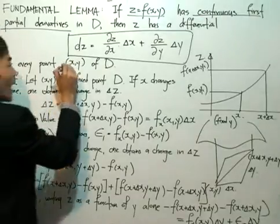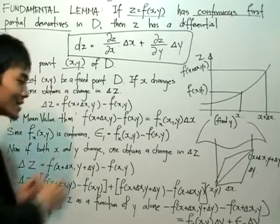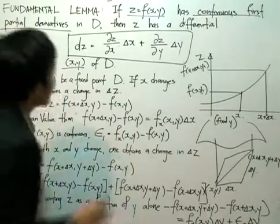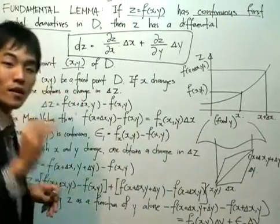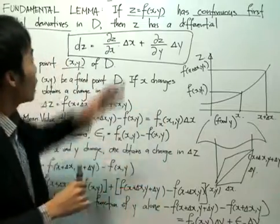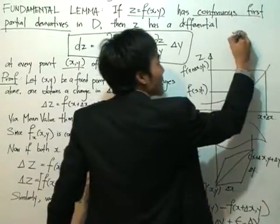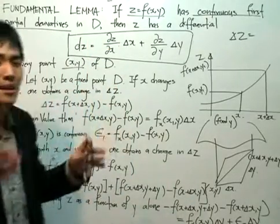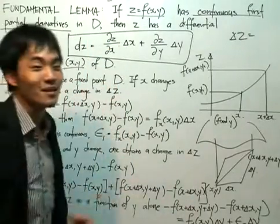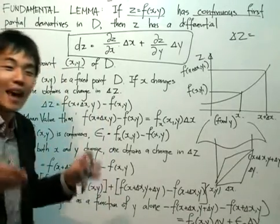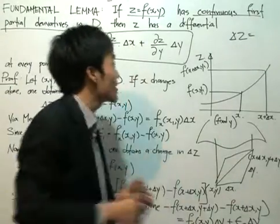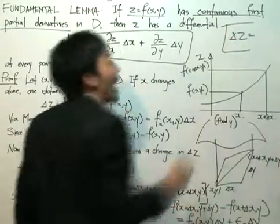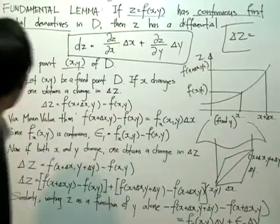At every point x and y of D, this is what we want to prove. Here's a rough plan: we simply first need to show that this function has a total differential. To get the total differential, the function delta z needs to take a certain form — it takes the form of a*delta_x + b*delta_y + epsilon_1*delta_x + epsilon_2*delta_y, where epsilon_1 equals 0 as (delta x, delta y) tends to (0, 0), from our previous definition. So our aim is: given this function, let's see what we can write delta z as.